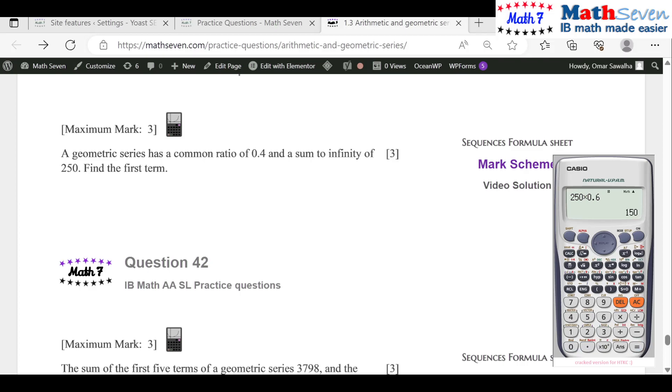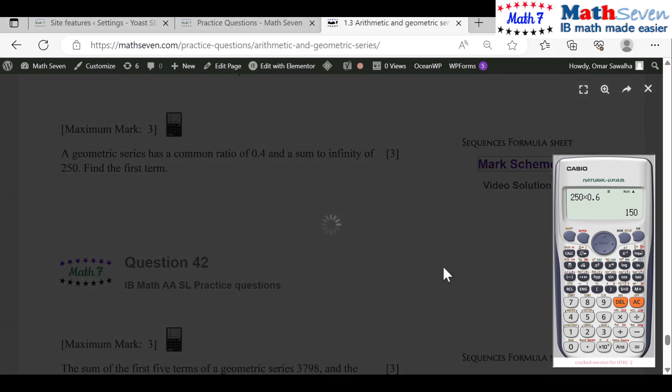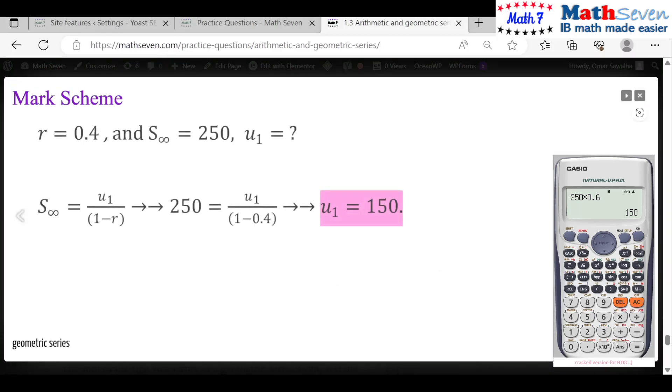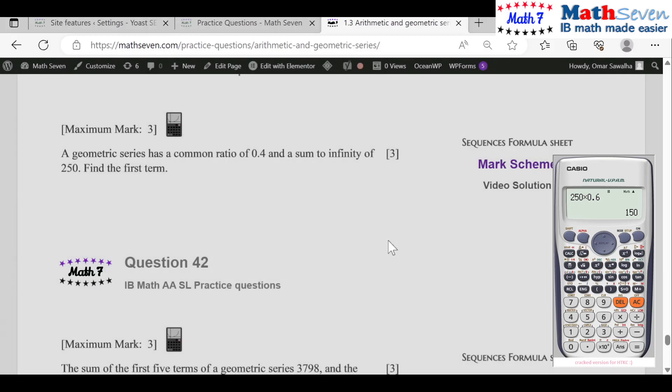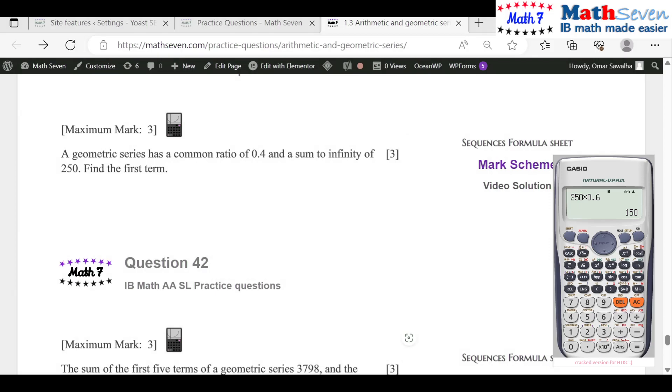So u1 equals 150, you're done. Check your mark scheme students, you'll find that in one step u1 equals 150, you are good to go. Let me know your comments about this particular question.